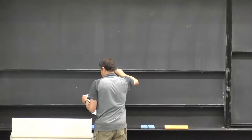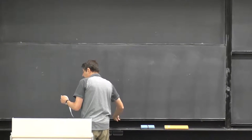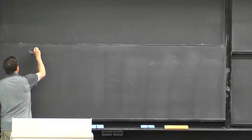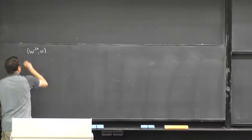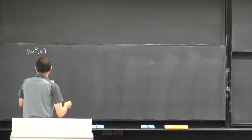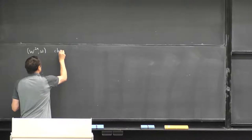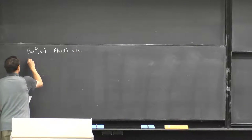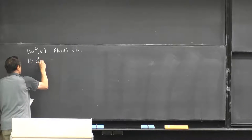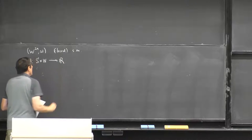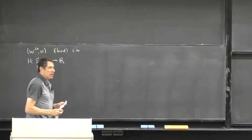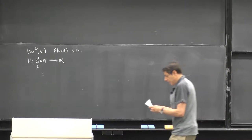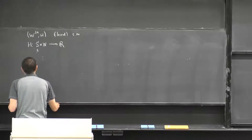For a while, the main object will be a Hamiltonian diffeomorphism of a symplectic manifold. So (W, ω) will be a symplectic manifold, usually closed, and H is a Hamiltonian on W. It's convenient to think of it as one-periodic in time — not really essential, but we will always assume when needed that it is one-periodic in time.